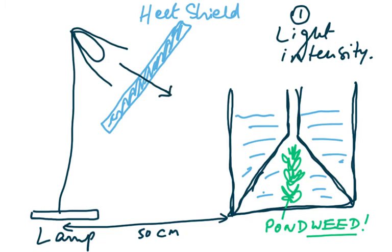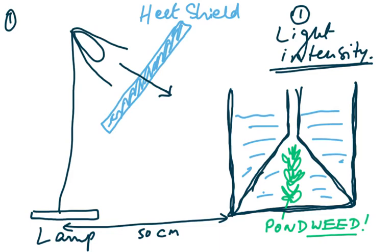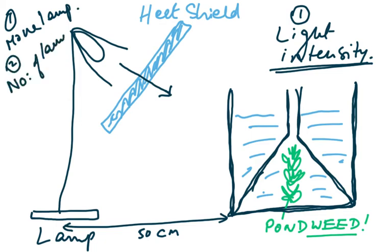Only light passes through the heat shield — the temperature of the beaker should not change, because otherwise someone could argue it is temperature causing the increased rate of photosynthesis. To change the light intensity, we can: number one, move the lamp; number two, increase the number of lamps; number three, increase the power of the bulb.